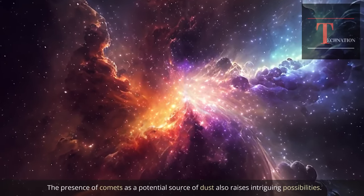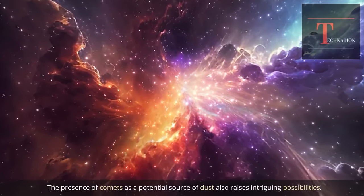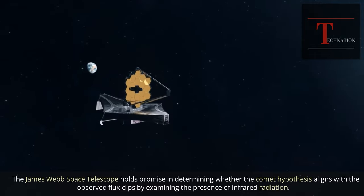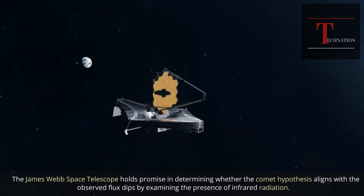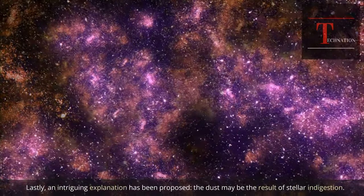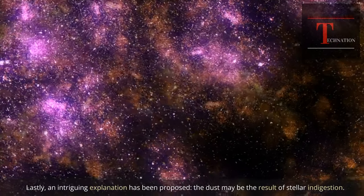The presence of comets as a potential source of dust also raises intriguing possibilities. The James Webb Space Telescope holds promise in determining whether the comet hypothesis aligns with the observed flux dips by examining the presence of infrared radiation. Lastly, an intriguing explanation has been proposed: the dust may be the result of stellar indigestion.